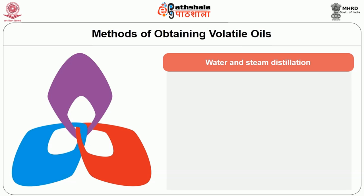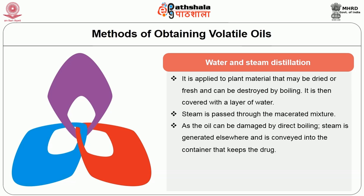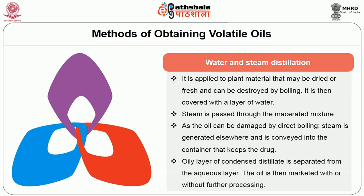The second method is water and steam distillation. It is applied to plant material that may be dried or fresh and can be destroyed by boiling. In the case of dried material, for example cinnamon or clove, the drug is ground and then covered with a layer of water. The steam is passed through the macerated mixture, generated elsewhere and conveyed into the container that keeps the drug. The oily layer of the condensed distillate is separated from the aqueous layer, and the oil is then marketed with or without further processing.